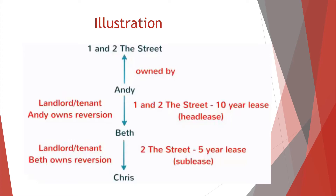Beth and Chris's lease is the sublease. Andy is Beth's landlord and she is his tenant. Andy owns the reversion to Beth's lease. The demised premises under their lease is 1 and 2 The Street. As well as being Andy's tenant, Beth is also Chris's landlord and Chris is her tenant. She owns the reversion in Chris's lease.